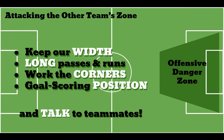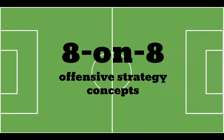So again, four concepts that we follow: width, long passes and runs, working the corners, and getting in a goal-scoring position. If we do these four things right and speak to each other on the field — coaches to teammates, teammates to teammates — about accomplishing these goals, we're going to have a very dangerous offense. We're going to have a lot of goal-scoring opportunities, score a lot of goals, win a lot of games, and have a lot of happy people. Keep these in mind — we'll work on them in practice and execute them in the games. That's the end of our offensive strategy concepts video. Coach Bruce — I will see you at practice.